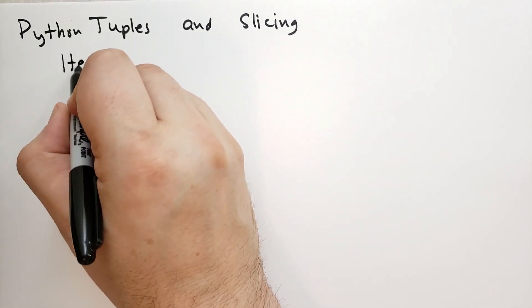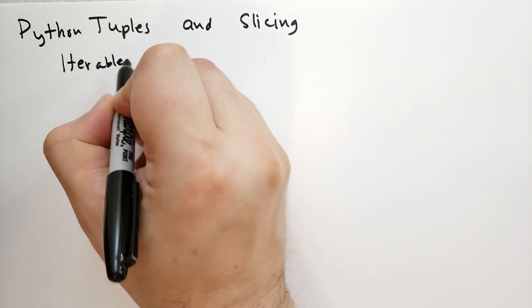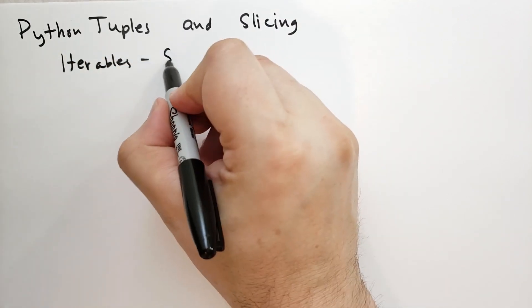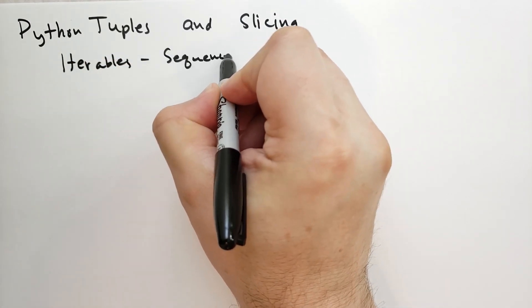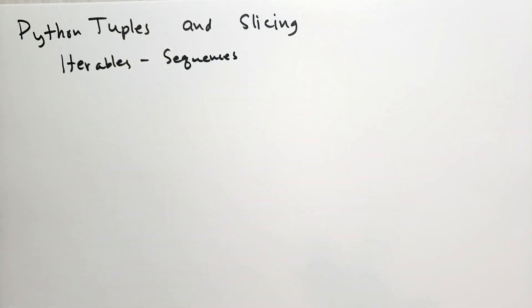So we've covered before iterables and we've talked about sequences. Strings and bytes are sequences of characters. In the case of strings, it's a sequence of code points in Unicode. In the case of bytes, it's a sequence of numbers between 0 and 255.